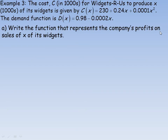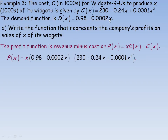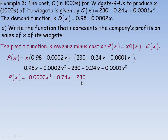We're asked to write the profit function. Profit equals revenue minus cost, and revenue is the demand function multiplied by x — price times quantity sold — then we subtract the cost function. Expanding, distributing x into the demand function, removing brackets, and collecting like terms, 0.98x minus 0.24x gives 0.74x, with a constant of minus 230. That is the profit function.